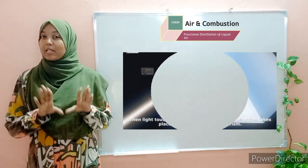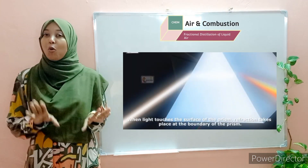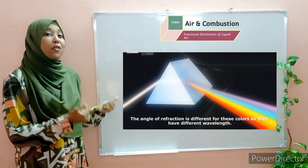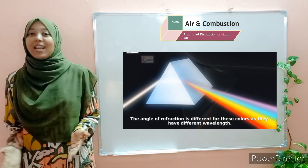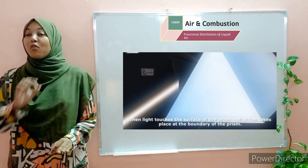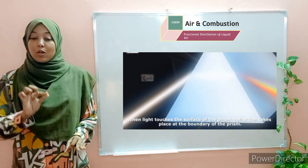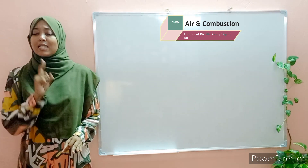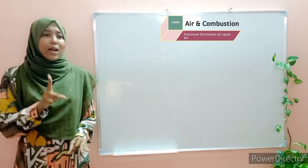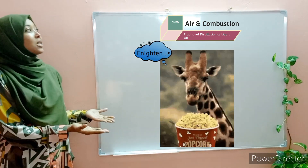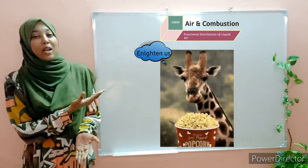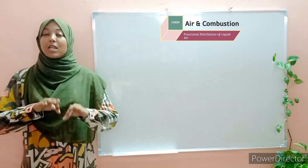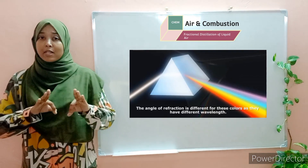Did you know that it's possible to separate white light into its different component colors, such that you end up having this beautiful rainbow of colors ranging from red to orange, indigo, and violet? Yes, it is, and this is by the use of a prism. This works because each individual color has a different wavelength. Now I know some of you might be wondering: did I click on the wrong video? Why is she discussing dispersion of white light when the lesson is supposed to be on fractional distillation of liquid air? No, you're in the right spot.